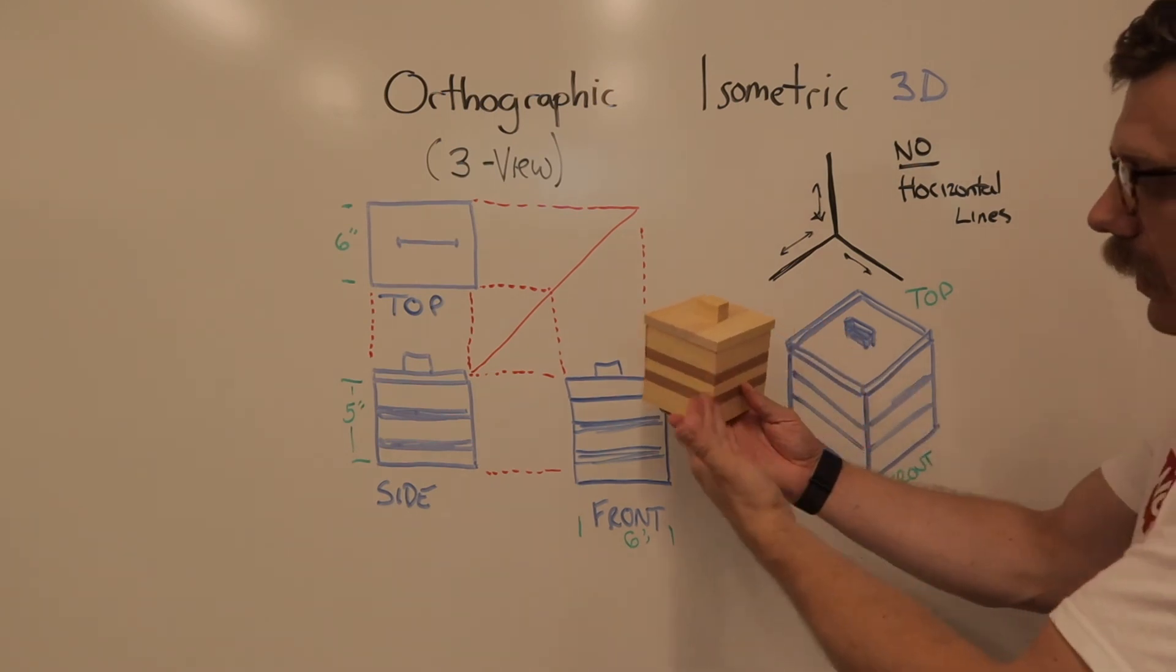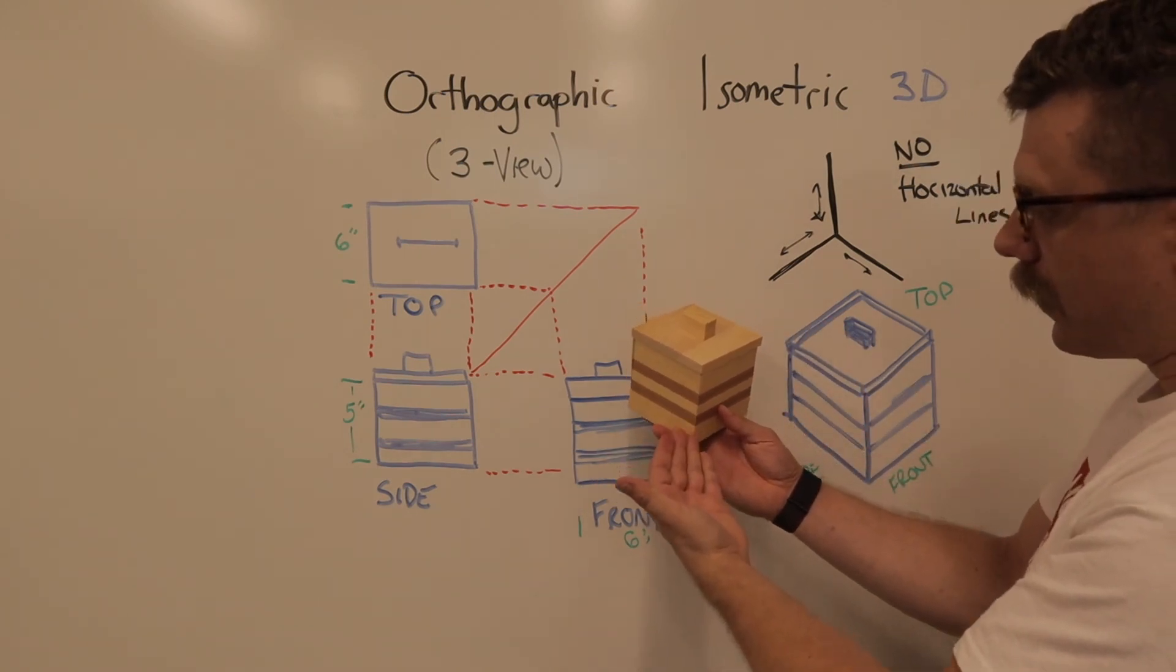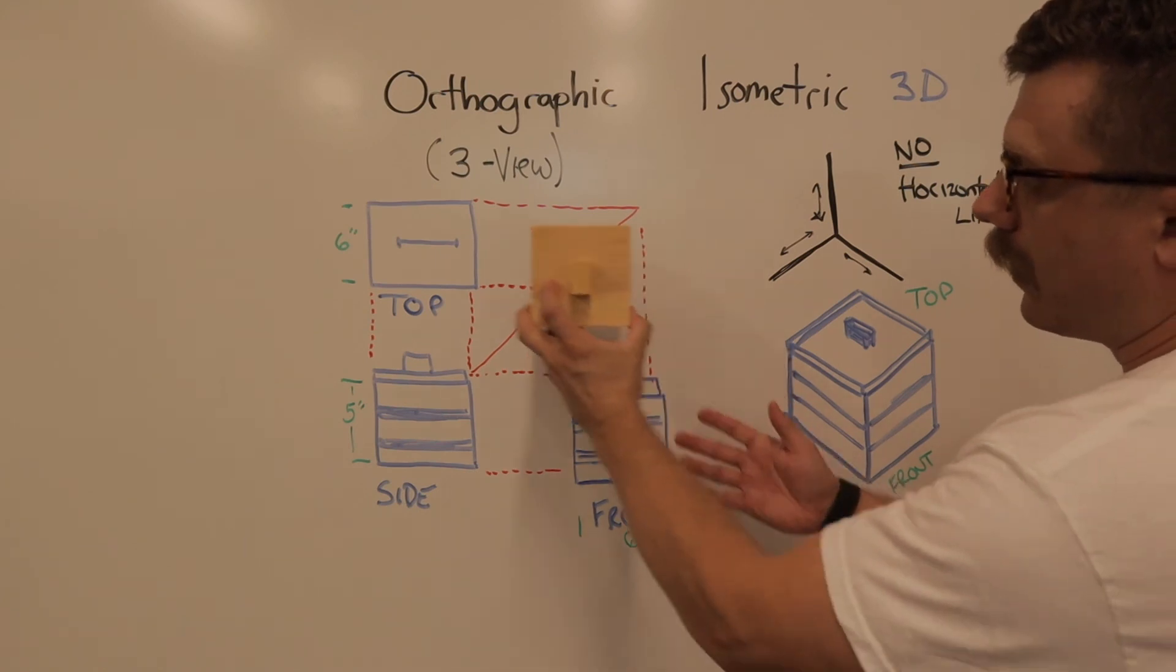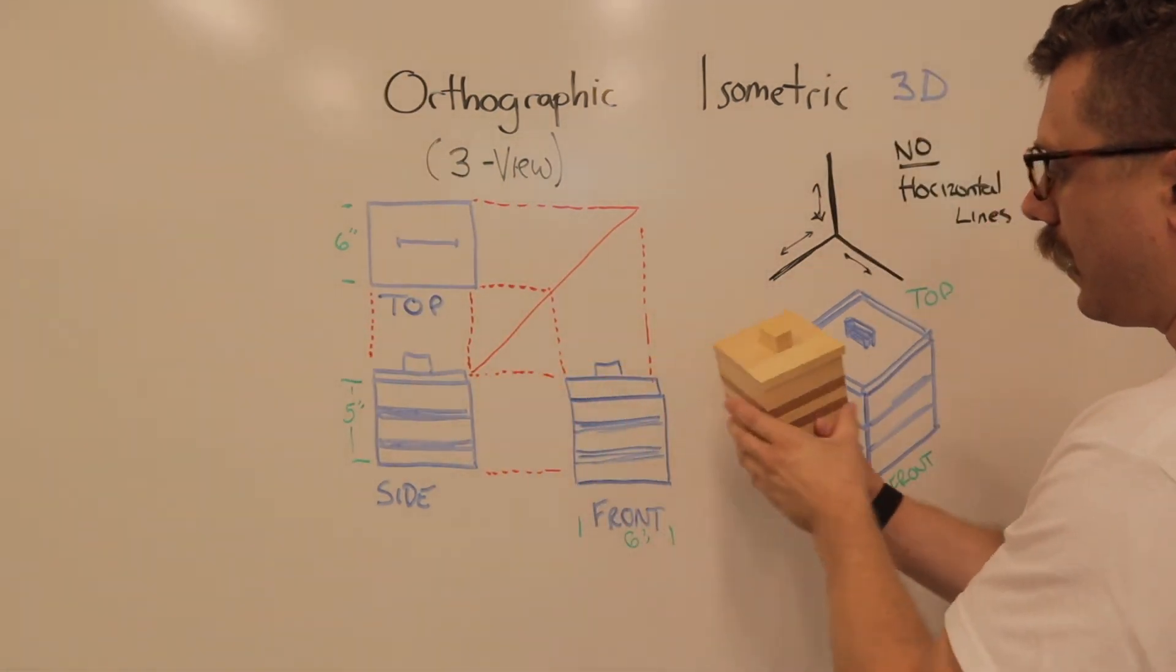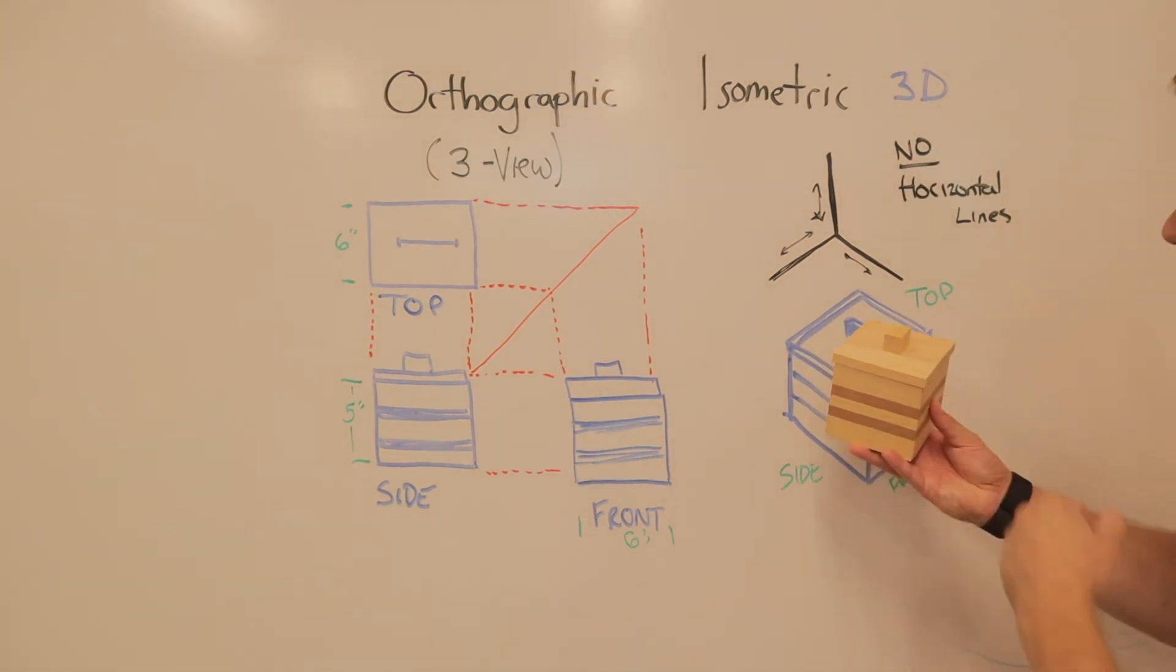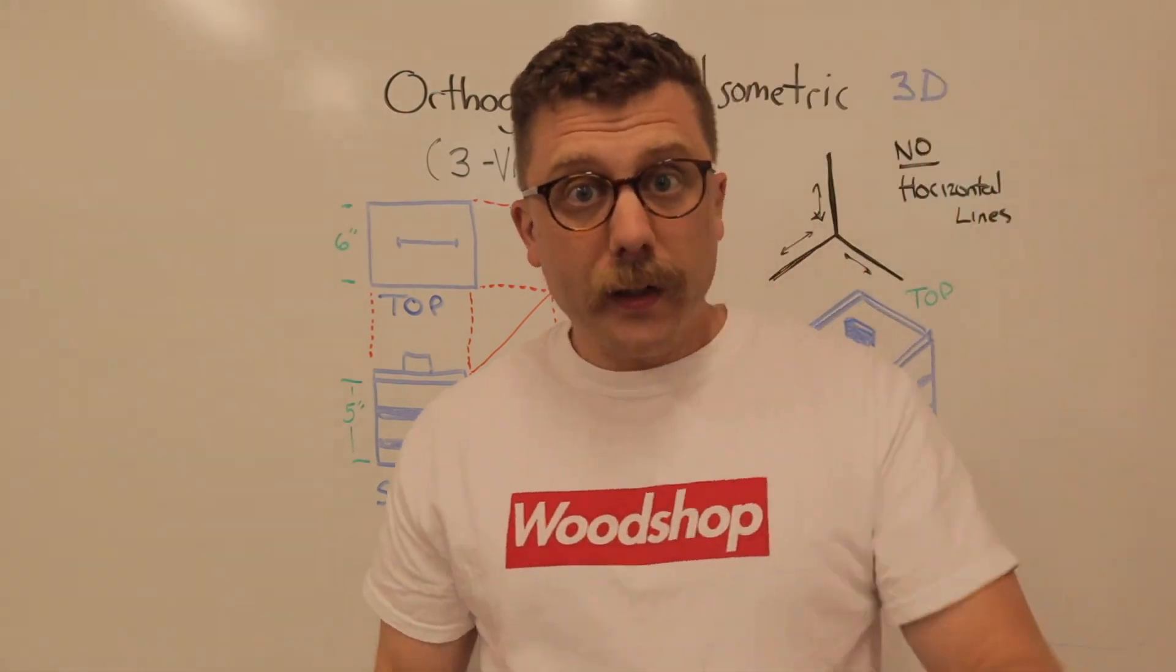So, if I looked at an isometric drawing of a piece of a project like this, and I needed to draw the top orthographically, the side, and the front, I could then draw all three just like this. So, we're going to practice.